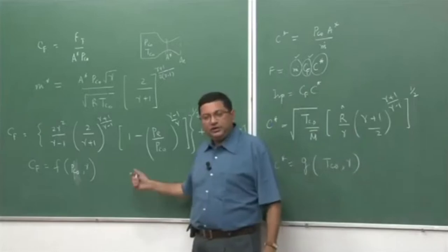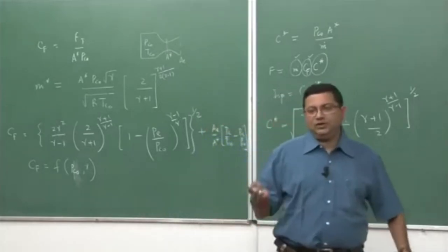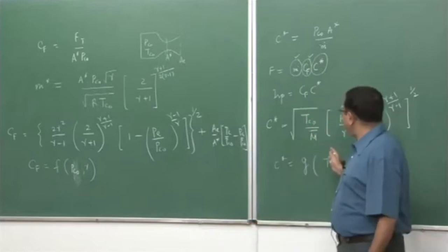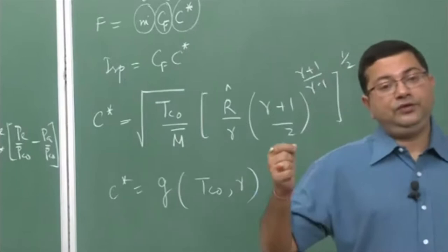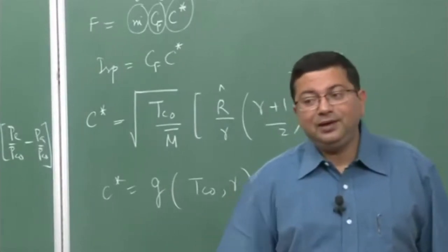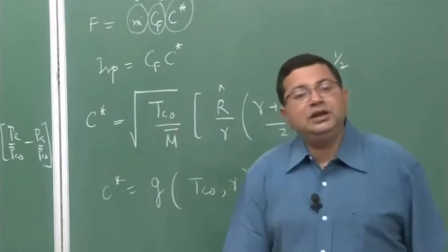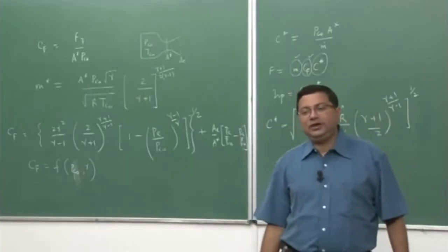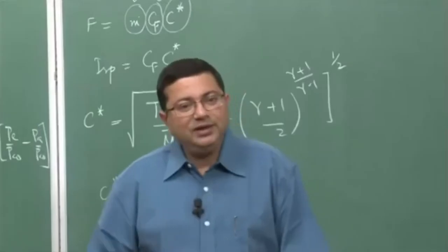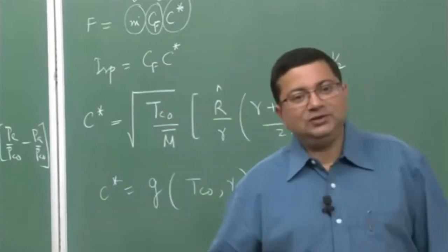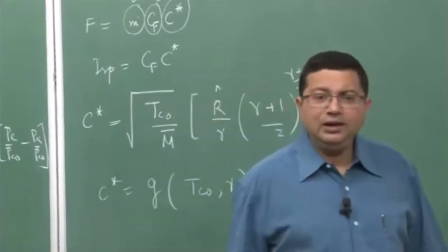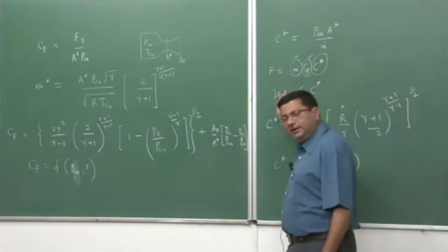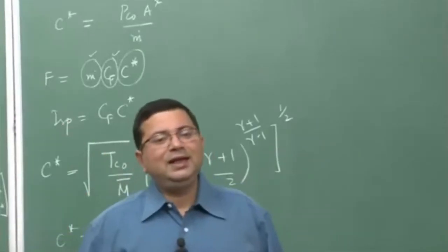There is a limit to p_c0: structural limits constrain the force on the rocket wall, and very high temperature causes thermal effects and requires heavy cooling. Furthermore, very high temperature leads to dissociation of the gases, which changes gamma — something we do not want. Dissociation is an endothermic reaction that takes away energy, reducing the overall energy available and thus reducing thrust. So although we can increase p_c0 and T_c0, there is a fundamental limit.